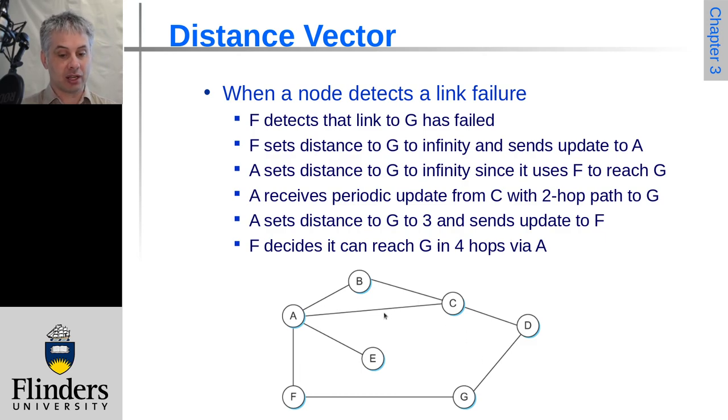Then, okay, well then I can get to G in three hops via C, and it will update its route to get there. So F will then in turn, by the same process, realise that it can get to G in four hops. So there's been a number of messages that have had to go through to realise what the alternate path is to get to G from F.